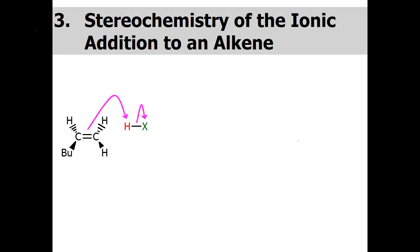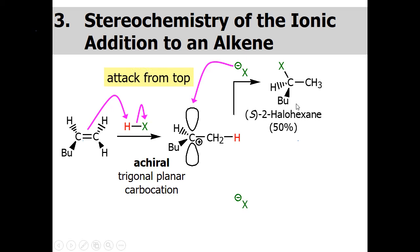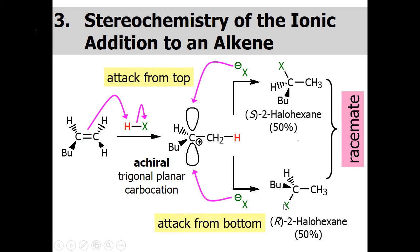Let's discuss the stereochemical outcome of ionic addition to an alkene. When a prochiral alkene reacts with a hydrogen halide, a planar carbocation is formed. There are two chances for the nucleophile to attack — from above or below the plane — giving a chiral molecule. Because both S and R attack are equally likely, we get a 50/50 mixture of both enantiomers, known as a racemic mixture.